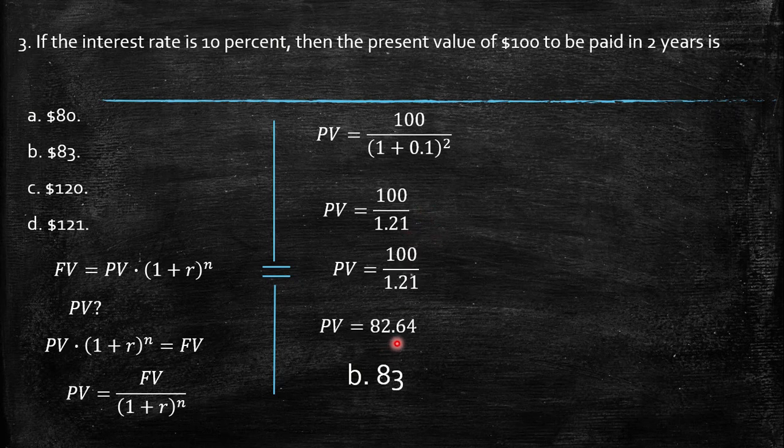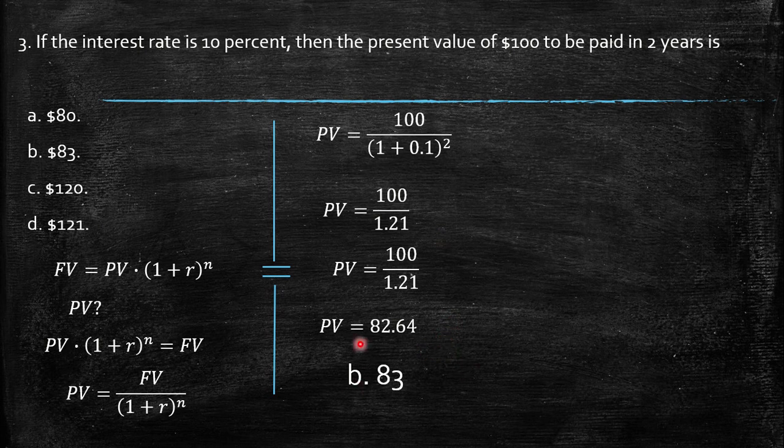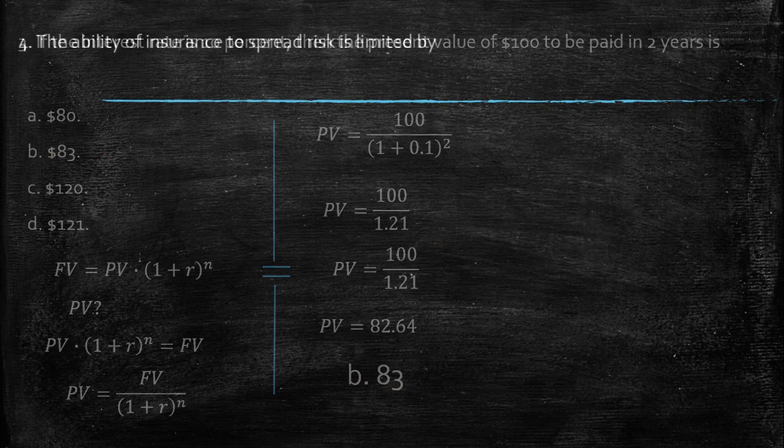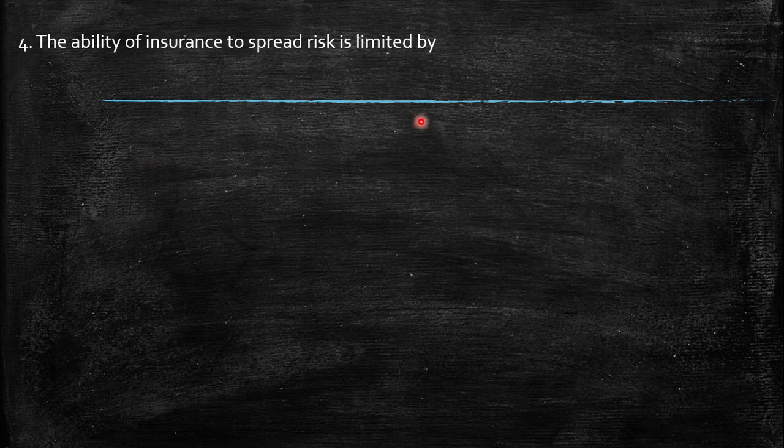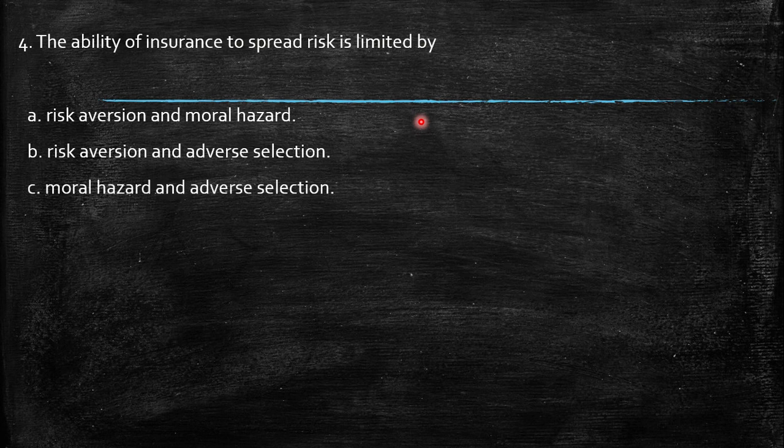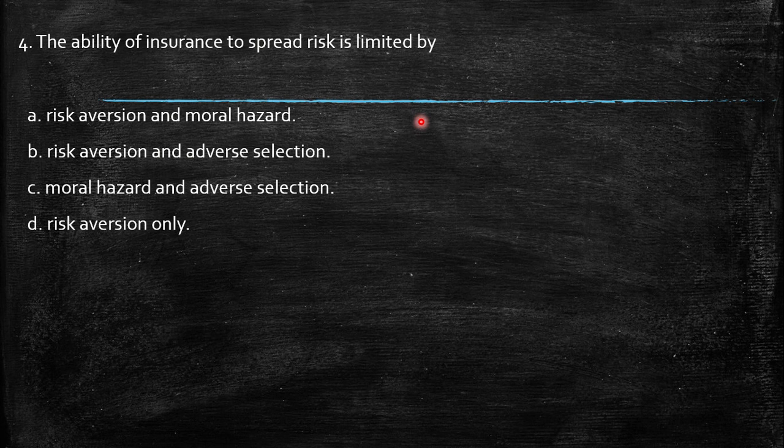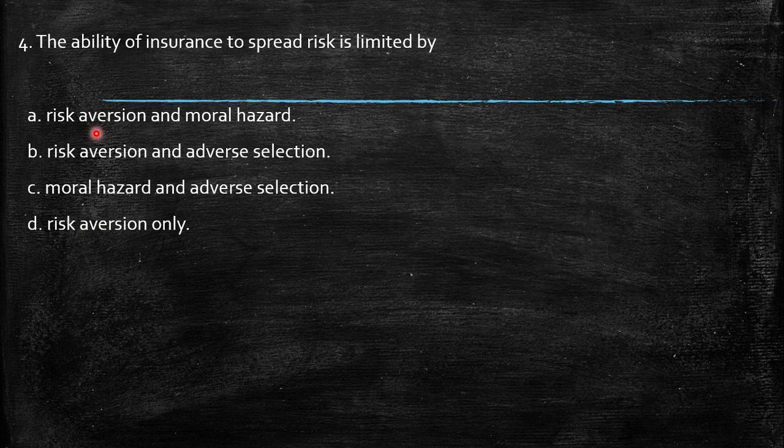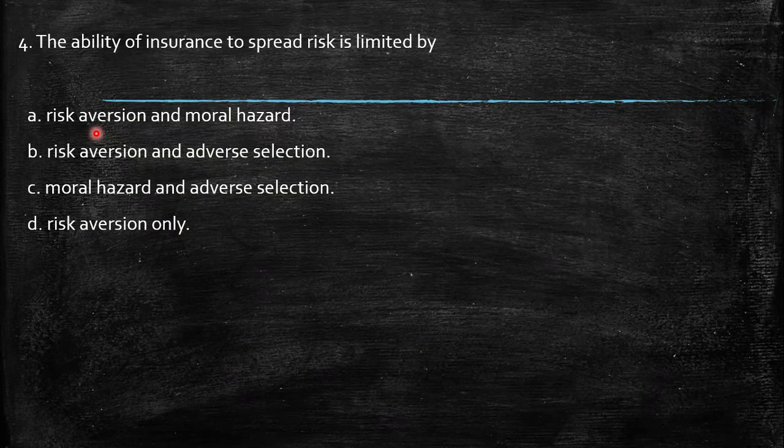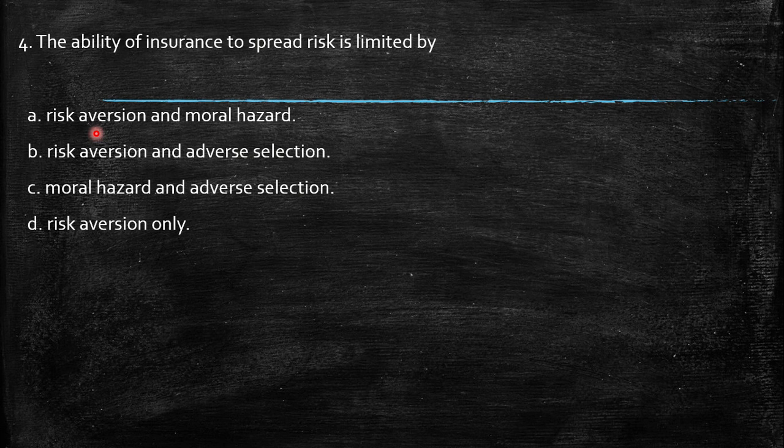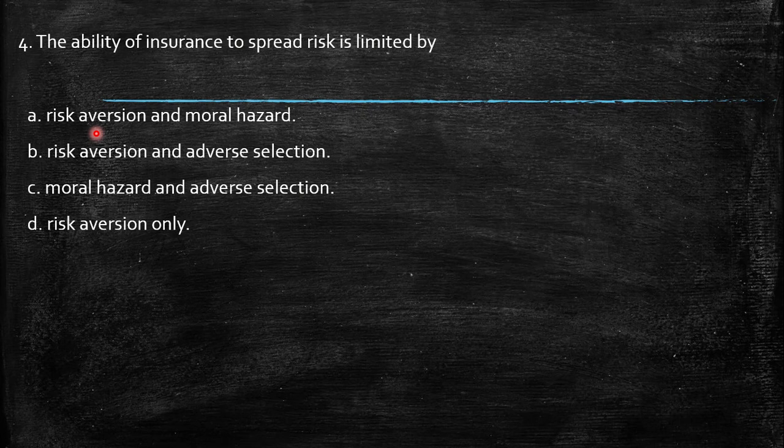Fourth, the ability of insurance to spread risk is limited by: risk aversion and moral hazard, risk aversion and adverse selection, moral hazard and adverse selection, or risk aversion only. First, it's important to know that risk aversion is how you face risk. If you are a risk lover, you love taking risk. If you are risk averse, you don't like much risk - you're not a risky person. This is a characteristic of everyone.